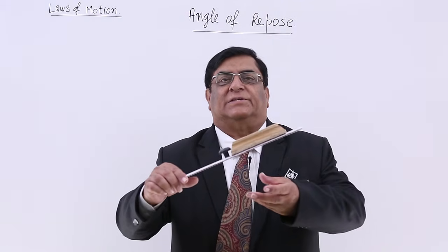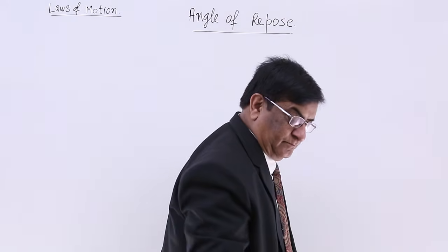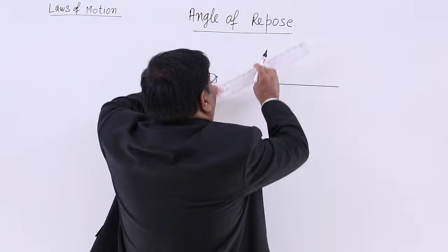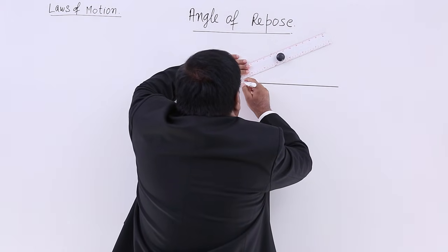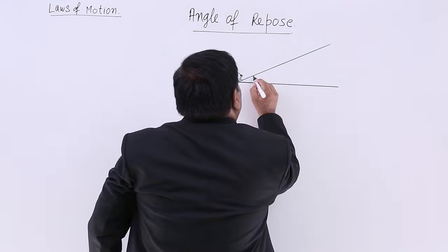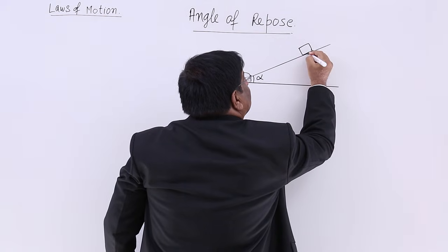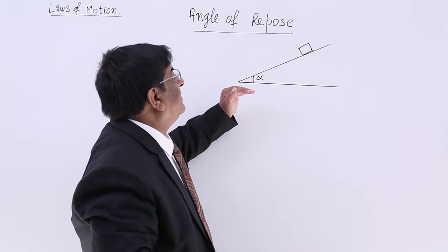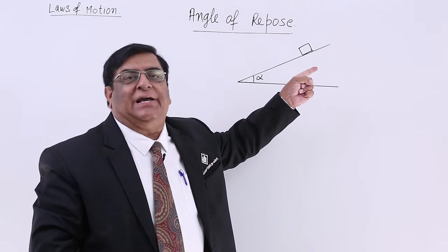Now I will do the calculations. This is our horizontal surface. I consider only that situation when it was just going to start motion — at angle alpha. When it is just at the verge of motion, if I increase the angle a little it will move. So this is the maximum angle where it can stay, not beyond this. This is the limiting case.